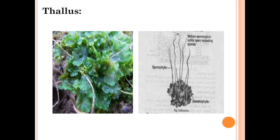What is a thallus? The plant body or structure which is not differentiated into proper root, stem, and leaves is called a thallus. A thallus is a structure in which root-like, stem-like, or leaf-like structures are present, but not actual roots, stems, or leaves.